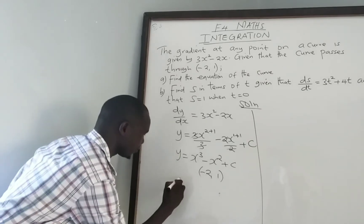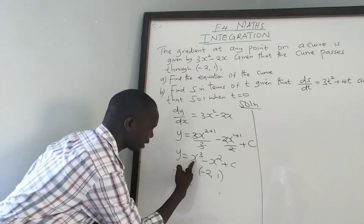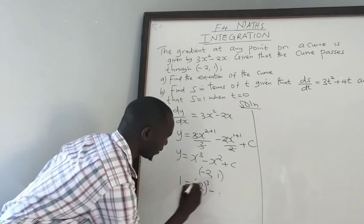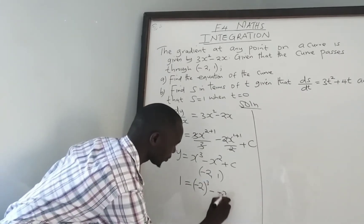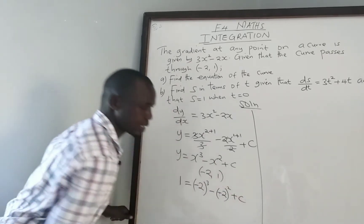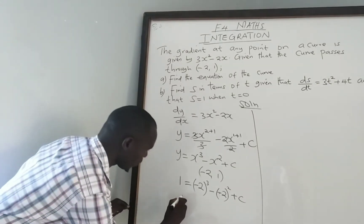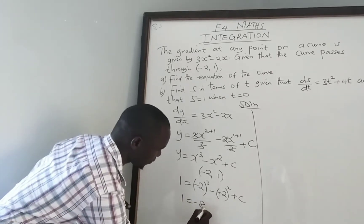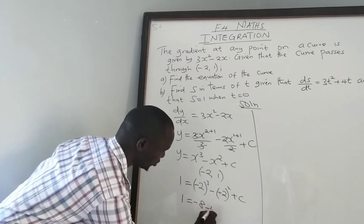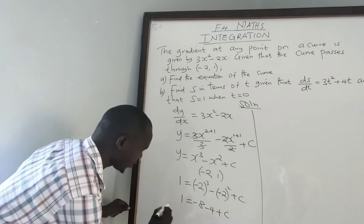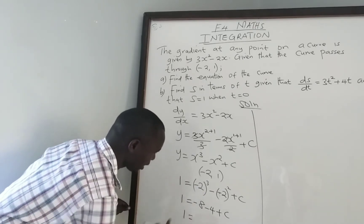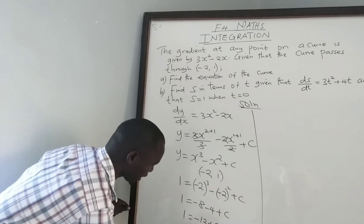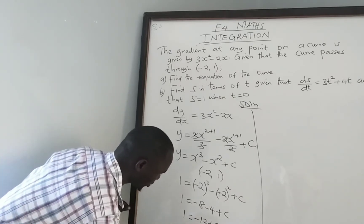Substituting y equals 1 and x equals −2: we get 1 equals (−2) cubed minus (−2) squared plus c. That gives us 1 equals −8 minus 4 plus c, so 1 equals −12 plus c. Taking −12 to the other side, our c is equal to 13.